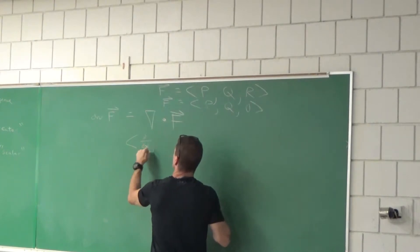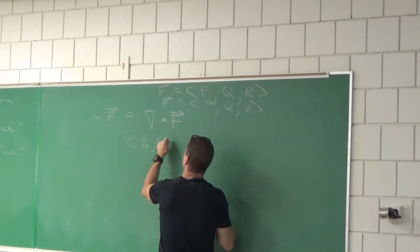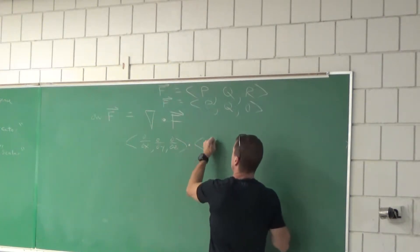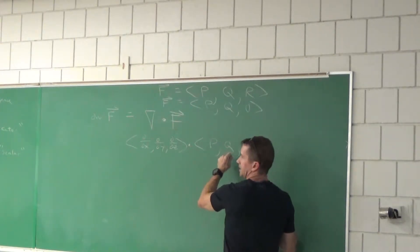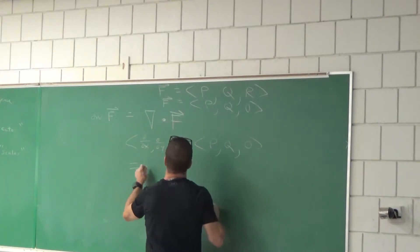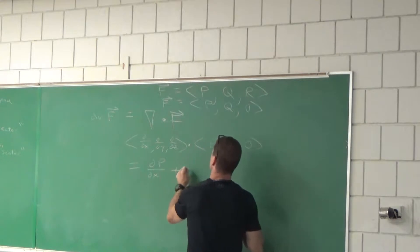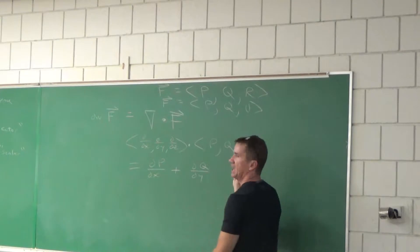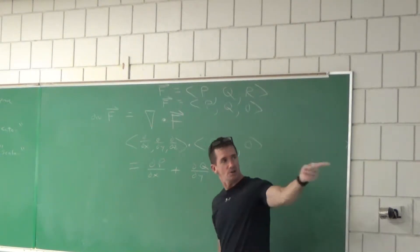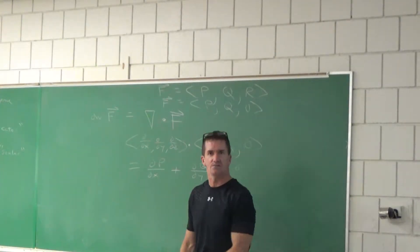So let me write this out. It'd be like d/dx i, d/dy j, d/dz k. Dot product with p, q, and some, it was r, but I'm gonna put a zero. I get zero. And I'm gonna duplicate that, and I'll turn that off so we can highlight it.